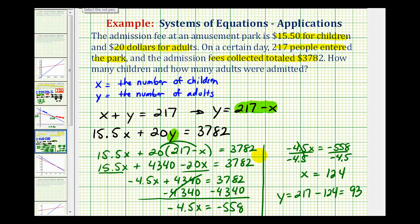So this tells us that there were 124 children and 93 adults admitted to the park on this given day.